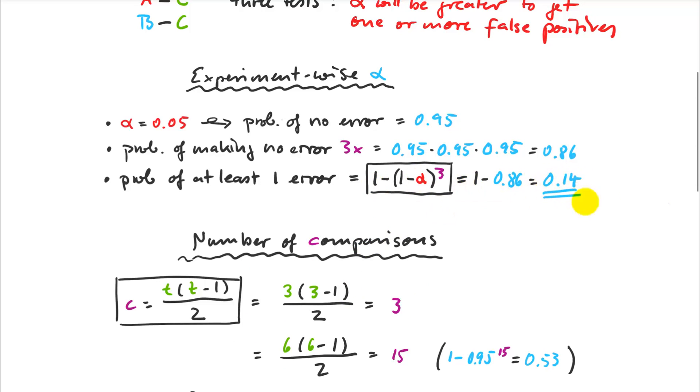That is really something we have to worry about as the number of comparisons increase. But even with three comparisons, this is still a considerable problem. I'm working with an alpha level of 0.14 instead of 0.05 if I didn't know what I was doing.